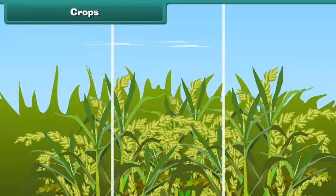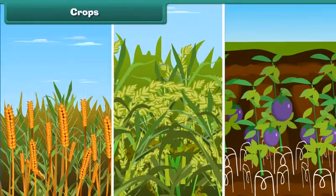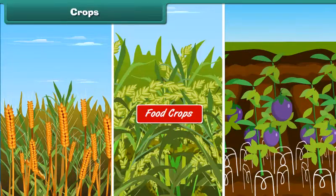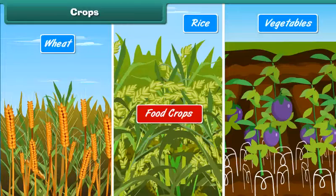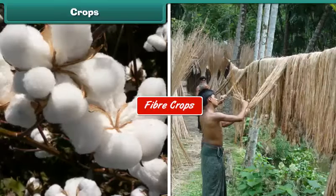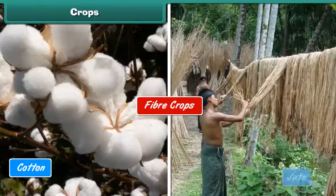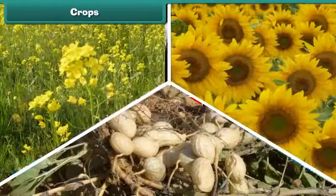Crops are mainly of three types. Food crops, for example, wheat, rice and vegetables. Fiber crops, for example, cotton and jute.